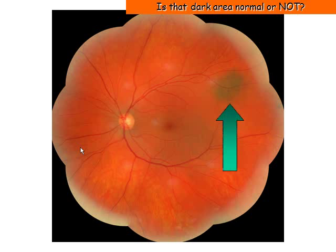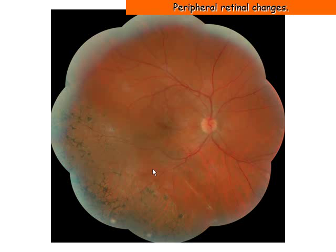In this picture, indicated by the arrow, is the dark area normal or not? With the wonderful ability of our camera to combine nine images into one, we are able to get this composite image which shows peripheral pigmentary changes, some of which are normal, some of which are not.